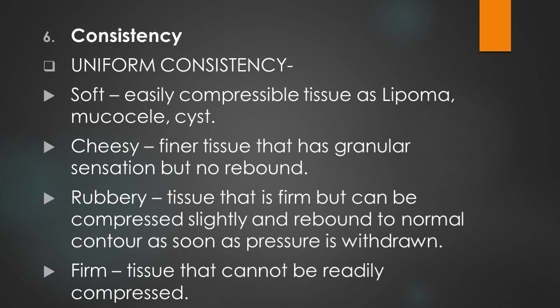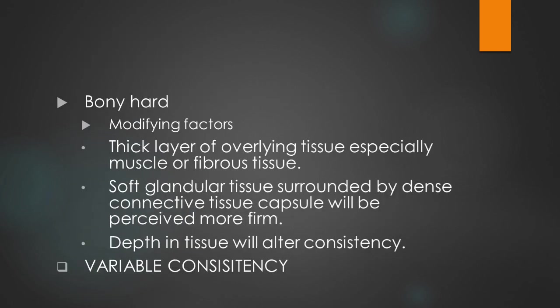Consistency of the swelling includes: soft and easily compressible tissue as in lipoma or mucosal cyst; cheesy tissue with granular sensation but no rebound; rubbery tissue that is firm but can be compressed slightly and rebounds to normal contour when pressure is withdrawn; and firm tissue that cannot be readily compressed. Modifying factors include a thick layer of overlying tissue, especially muscle or fibrous tissue — soft glandular tissue surrounded by dense connective tissue capsule will be perceived as more firm.